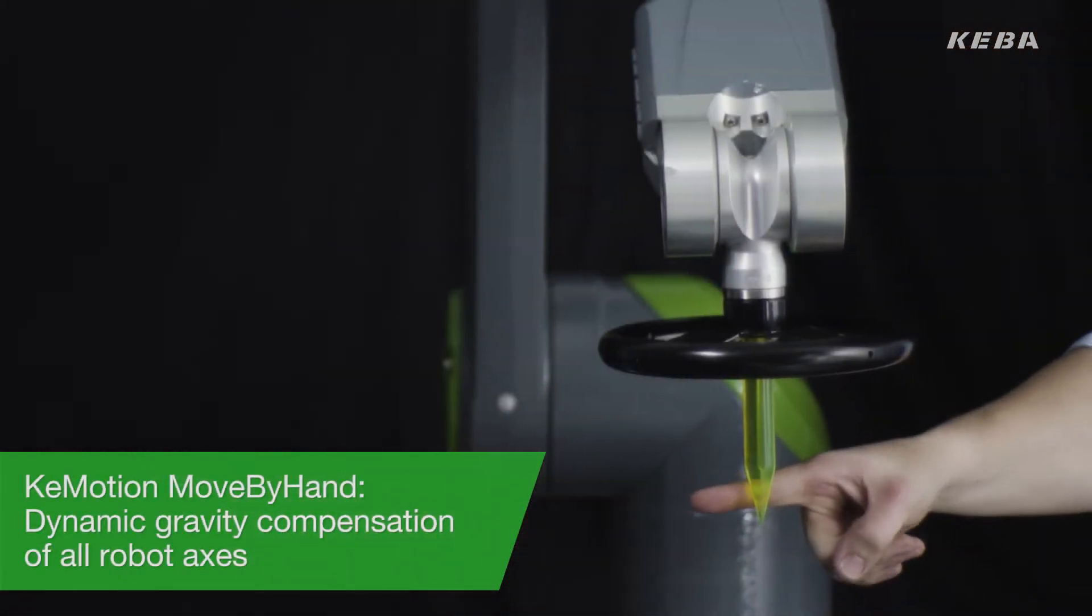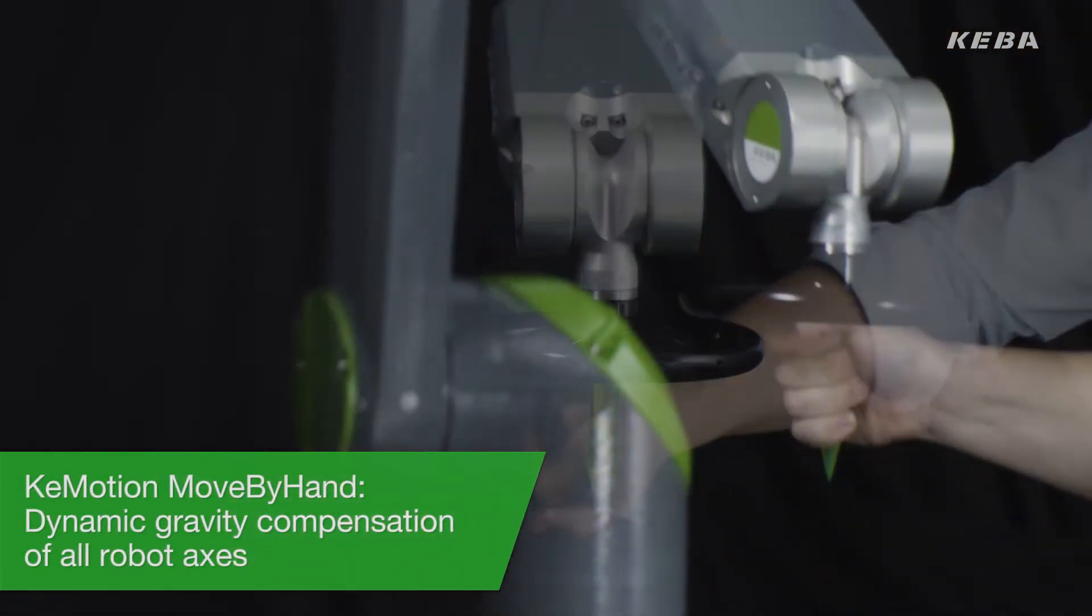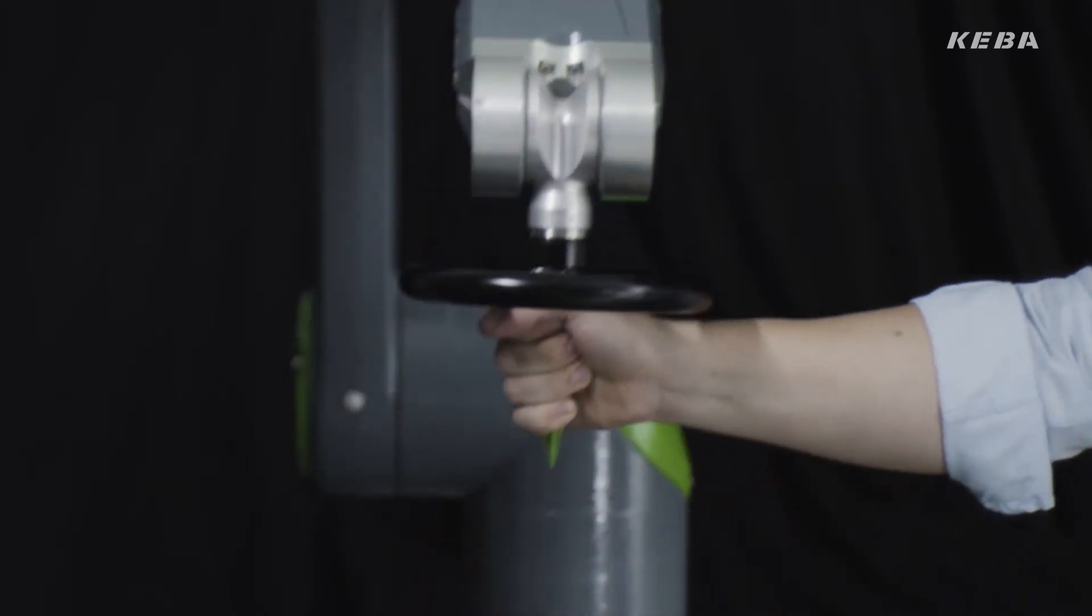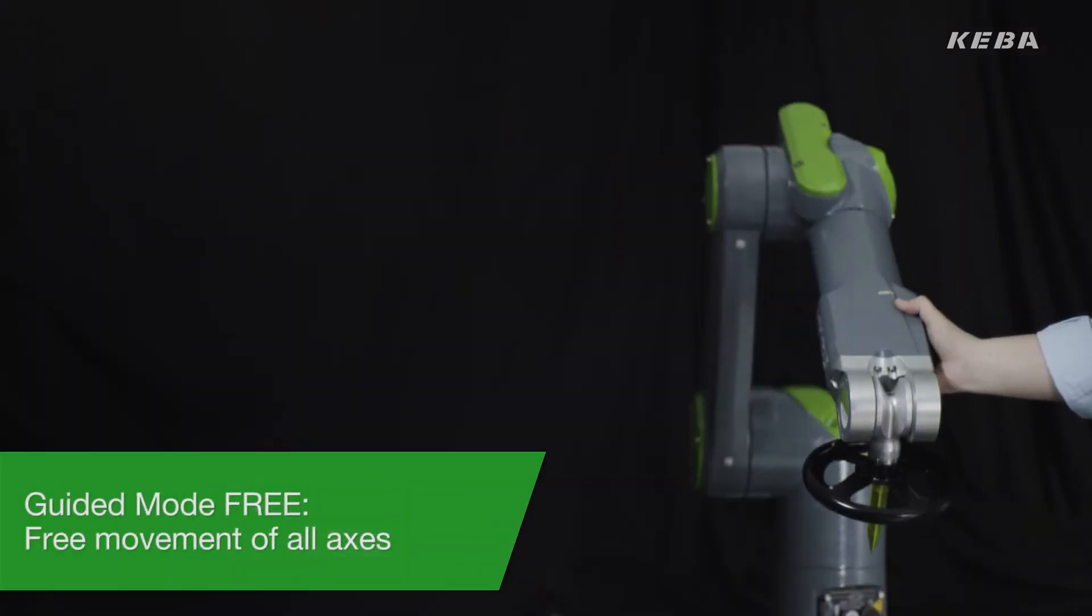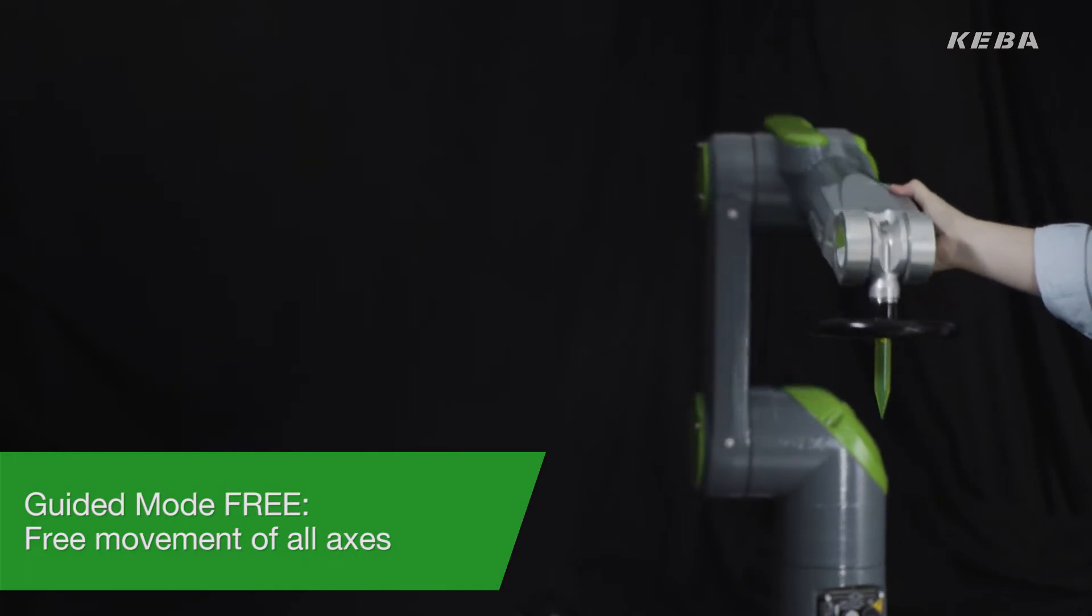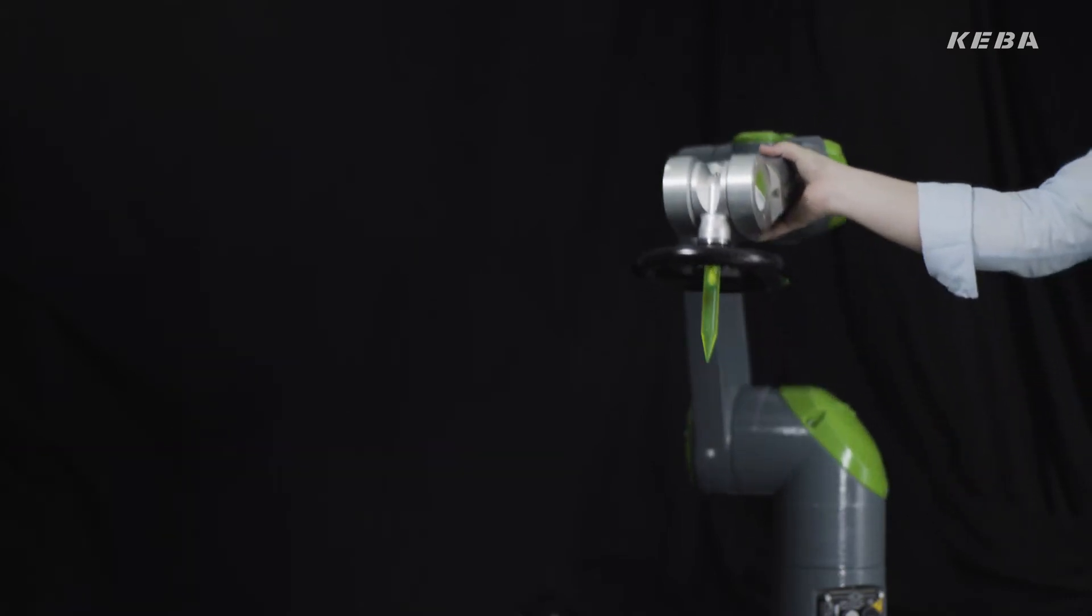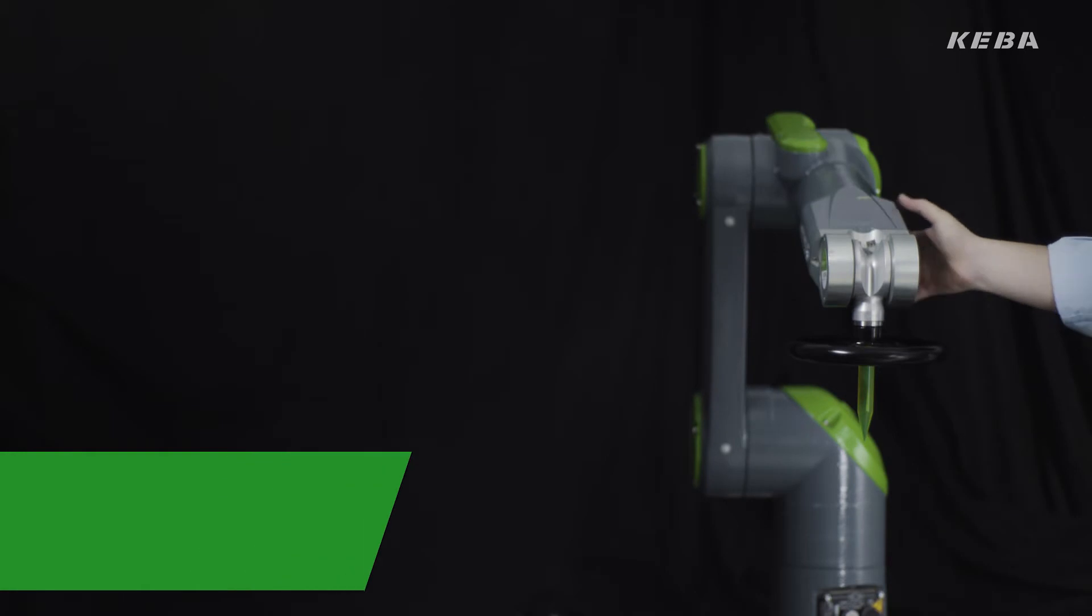Based on our robotics experience we defined three different modes. In the first mode, the guided mode 3, all robot axes can be moved freely. It's obvious how easy you can move the robot to every position you want. You even don't feel the robot's weight at all.